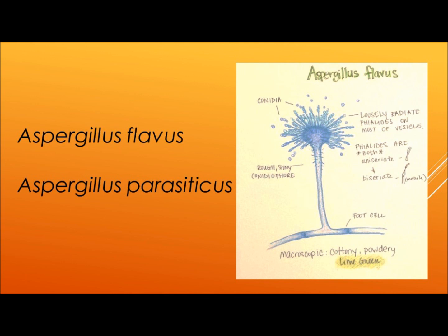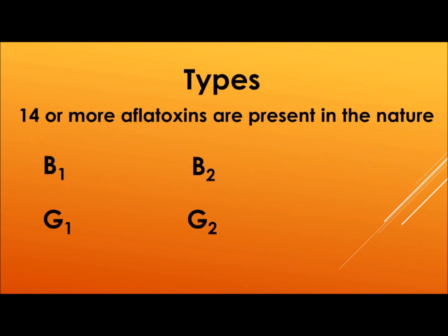Aflatoxin is a poisonous substance produced by fungi. Major fungi species responsible for Aflatoxin production are Aspergillus flavus and Aspergillus parasiticus. These fungal species contaminate food crops and cause serious health issues in humans and other living beings.